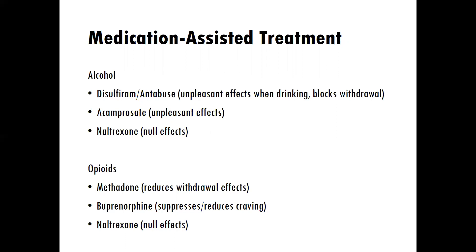Acamprosate, similarly to Antabuse, has unpleasant effects — for example, it makes a person vomit extensively. Naltrexone has null effects, meaning you don't experience the euphoria from drinking. Naltrexone, also known as Narcan, has a major role in recovery from opioids. We'll also learn about Methadone, which reduces withdrawal effects and is a more controlled way of helping a person manage cravings related to opioids, especially heroin. And we'll learn about buprenorphine, which suppresses and reduces craving.